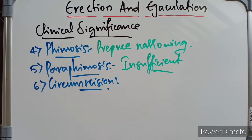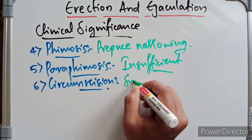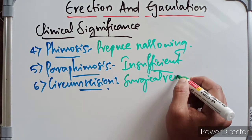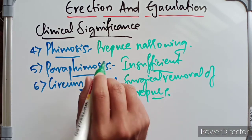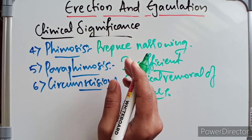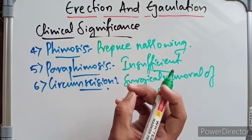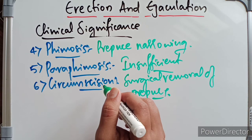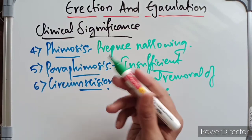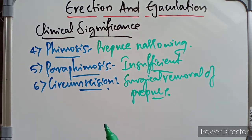Finally, circumcision is the surgical removal of the prepuce. In children and adults, circumcision is sometimes required to relieve a tightly constricting prepuce when phimosis is severe. It is also performed for religious reasons and is one of the oldest operative procedures in the world.